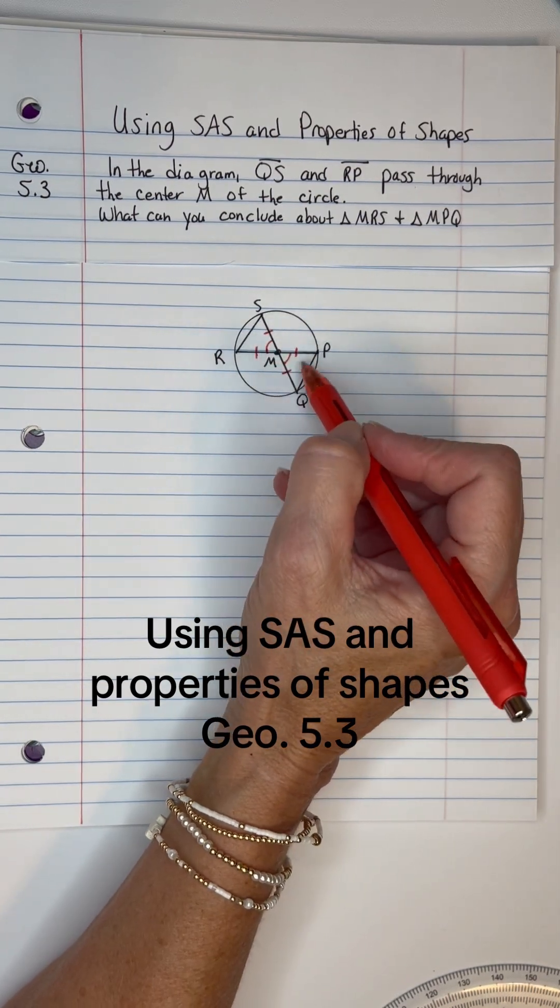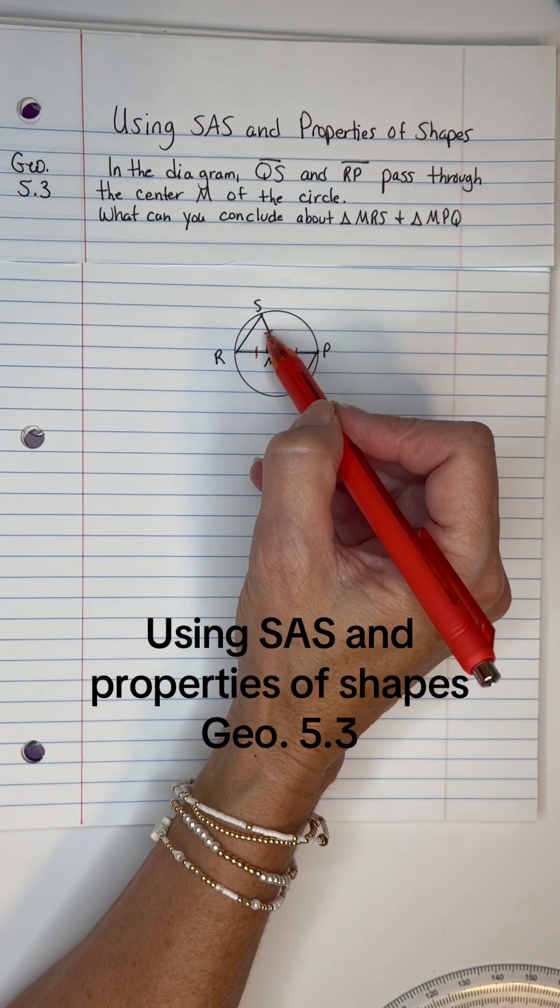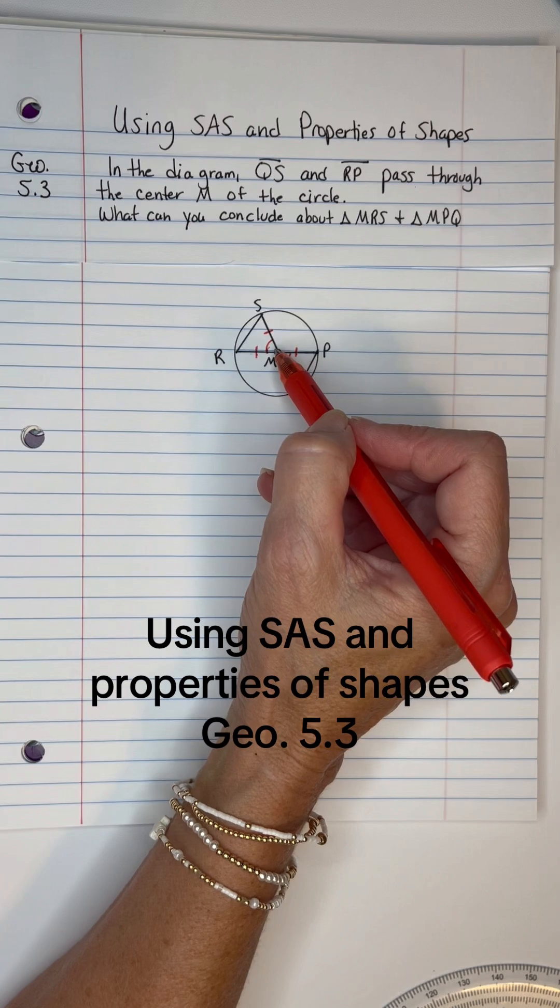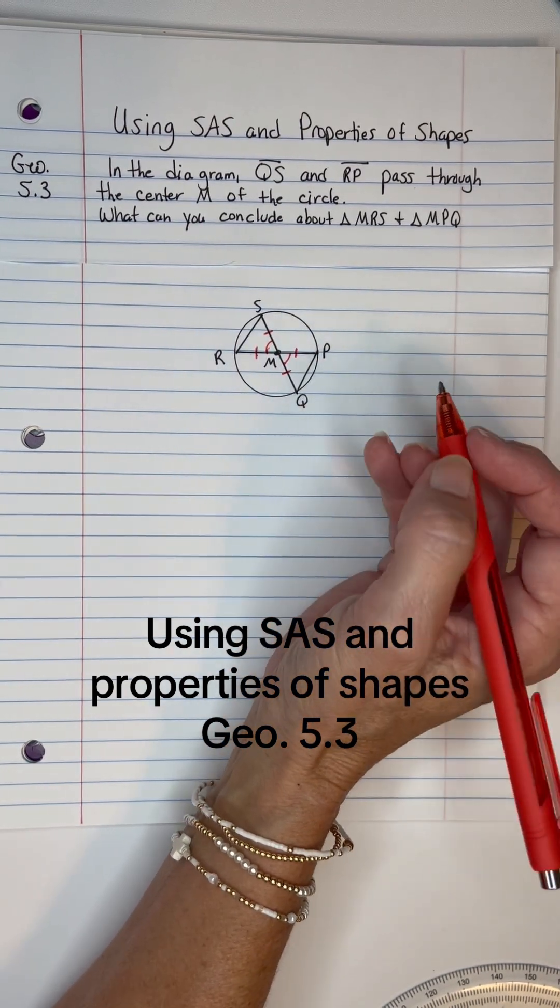Now if I'm just looking at this triangle here and this triangle here, I have an angle that's in between the sides here, side angle side, side angle side. So I can prove that by side angle side, they are congruent.